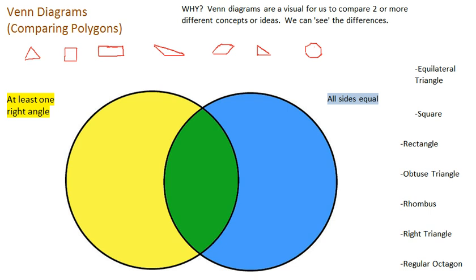Well, why Venn Diagrams? They're visual for us to compare two or more different concepts or ideas. We can see the differences. When we start placing information into the Venn Diagram, we can just visually see, based on where they are, all the differences between the polygons. We don't actually have to say too much because it's visually there for us to see.